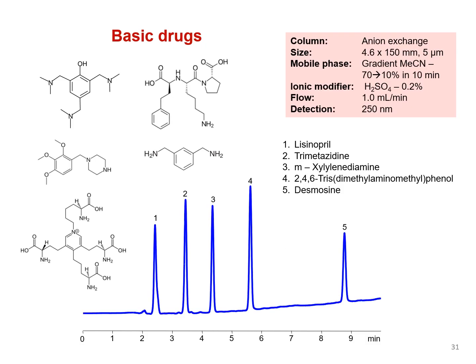BIST gradients can be fairly simple and can help make complex separations relatively easy. Here, several basic drug compounds were retained with BIST using a simple gradient, reducing the acetonitrile concentration from 70% to 10% over 10 minutes. Applying a gradient to the organic modifier concentration allows for a specific but convenient separation. The initial higher organic concentration starts the separation, while the lower concentration towards the end ensures the analytes elute in a timely manner.